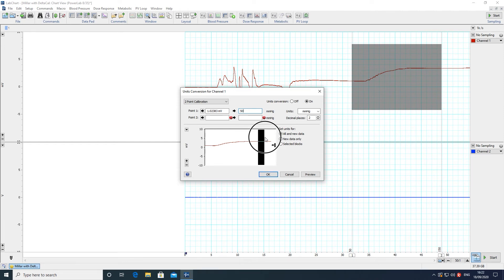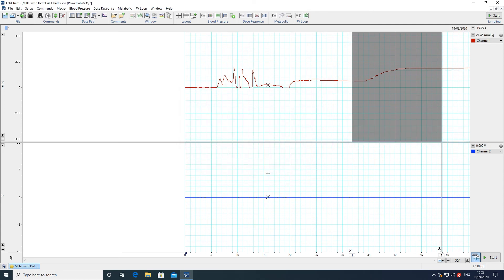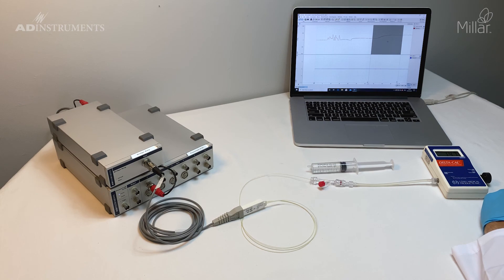Then select the last part which was 150. My units are millimeters of mercury. Click OK and now I'm ready to record pressure. The system has been calibrated.